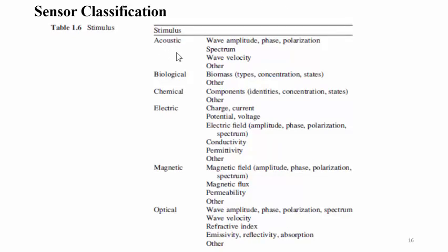Regarding stimulus parameters, the table shows acoustic wave stimuli where amplitude, phase, polarization, spectrum, and wave velocity can be sensed. For biological stimulus, biomass types, concentration, and states can be detected by the sensors. Chemical stimulus classification is also included.